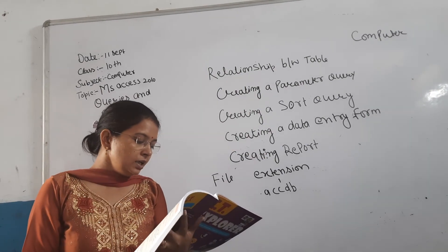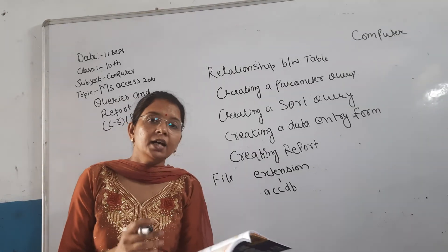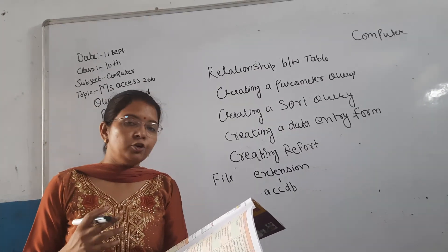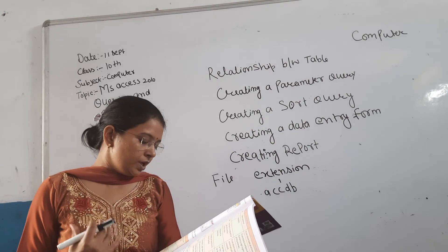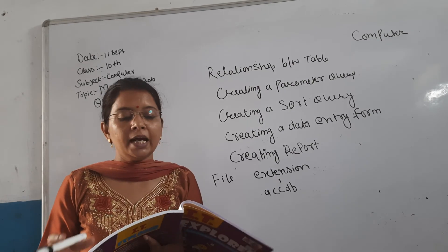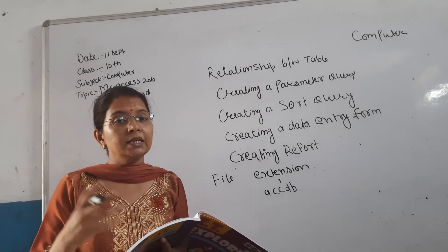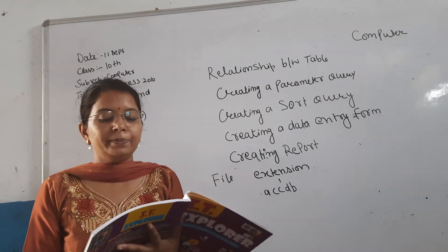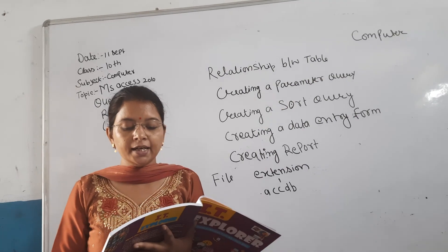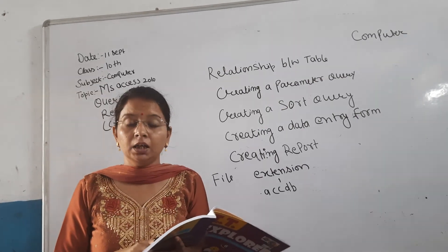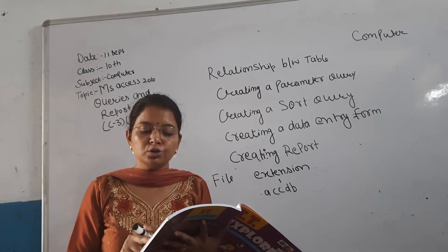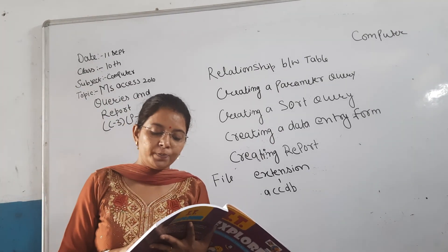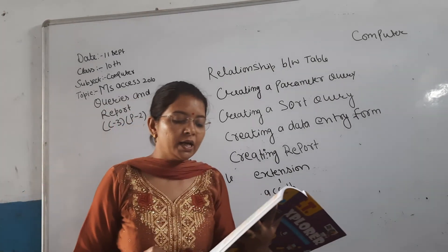Data types and their uses: Text stores text, numbers, alphabets, and special characters. Memo also stores numbers, alphabets, and special characters but for longer entries. Number stores numeric data. Date/Time stores dates and times. Currency stores currency numbers. AutoNumber is a number in sequence assigned automatically by MS Access. Yes/No is displayed as a checkbox. OLE Object creates an embedded electronic object. Hyperlink stores website or email addresses using numbers, alphabets, and special characters. Attachment is used to attach files or documents.